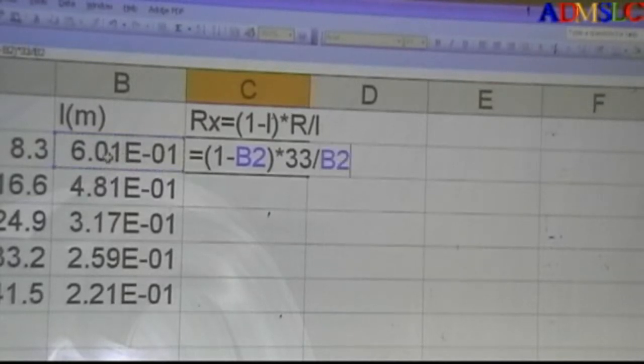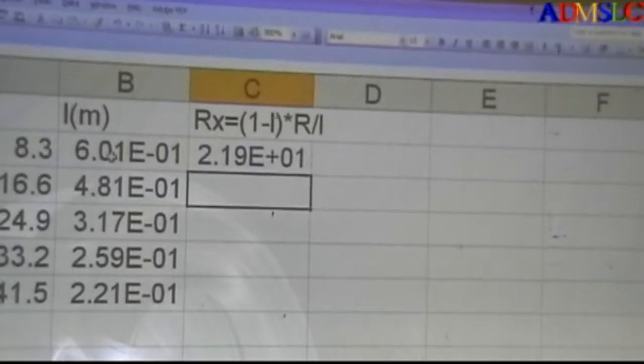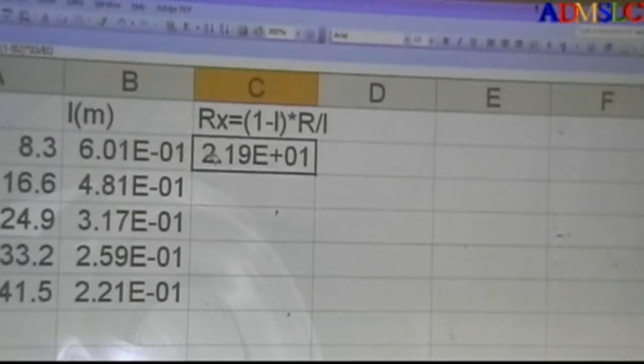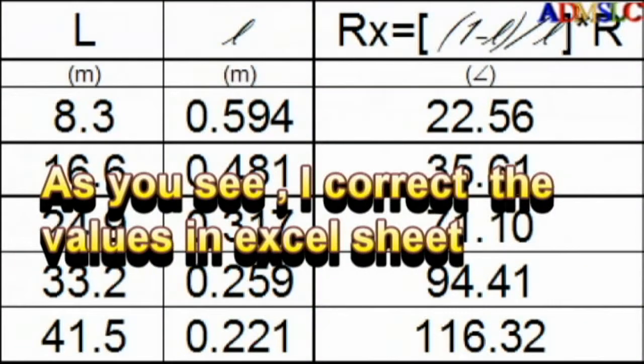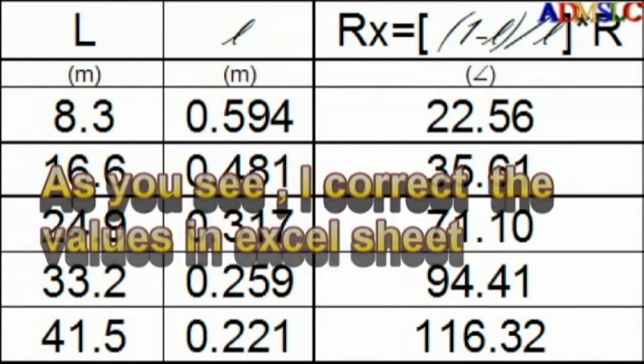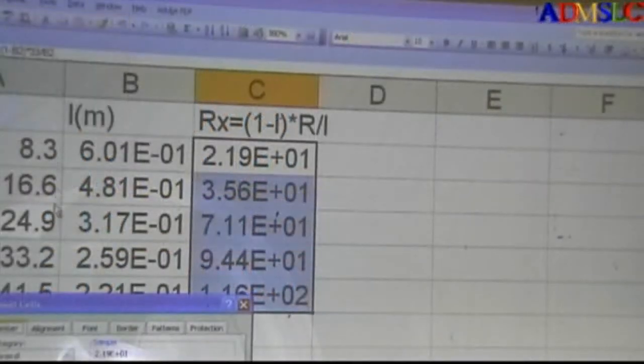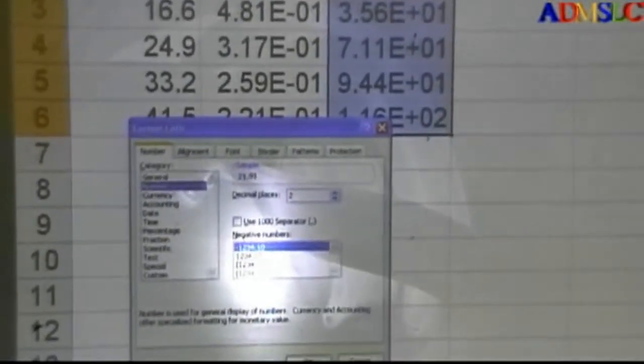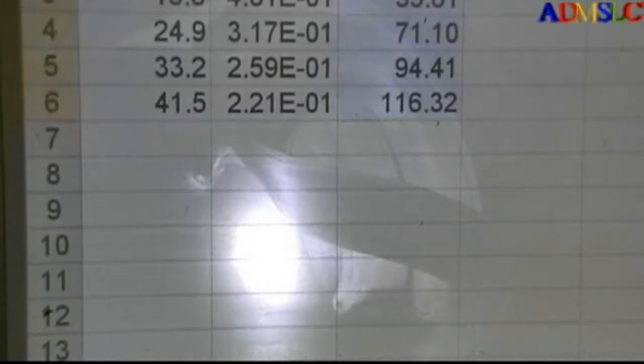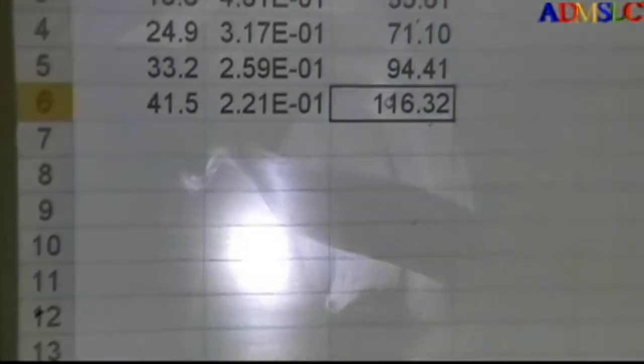So this gives me, you see, I will change it later. This gives me 29, 21, and 22 and these things. So I will change the format: cell, number, and make two decimal. It's okay. So this gives me the ohms that I have.